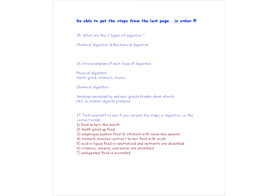And now let's go over a few more review questions. So what are the two types of digestion? Again, that's chemical digestion and mechanical digestion. Next question, give examples of each type of digestion. Physical: teeth grind up our food. Stomach churns our food. Chemical digestion. Again, we saw this amylase substance, which is an enzyme secreted by the salivary glands. Breaks down starch. Also, we have HCL acid in the stomach which digests proteins. Okay, so now test yourself again to make sure you can put the steps in digestion in the correct order.